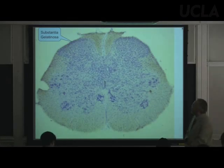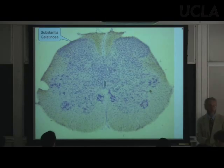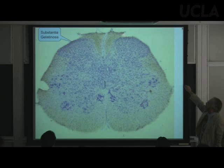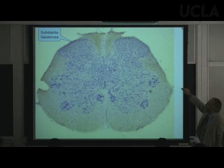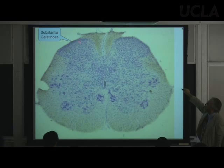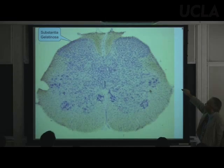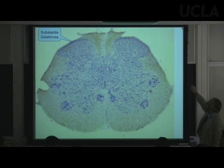Here, as promised, is a real substantia gelatinosa. The very tips of the dorsal horns are the substantia gelatinosa — cell bodies there are tiny and very compact. Someone with too much imagination decided it looked like jelly, hence 'gelatinosa.'